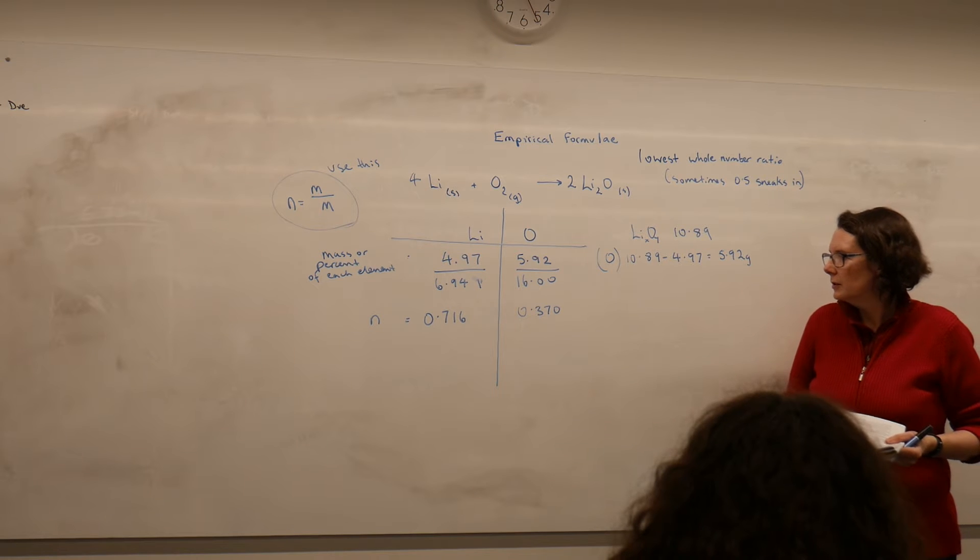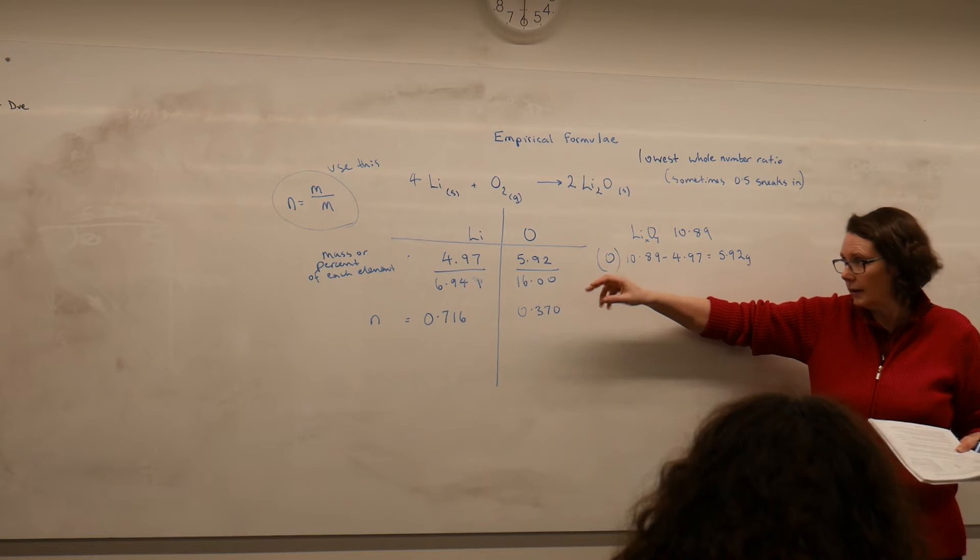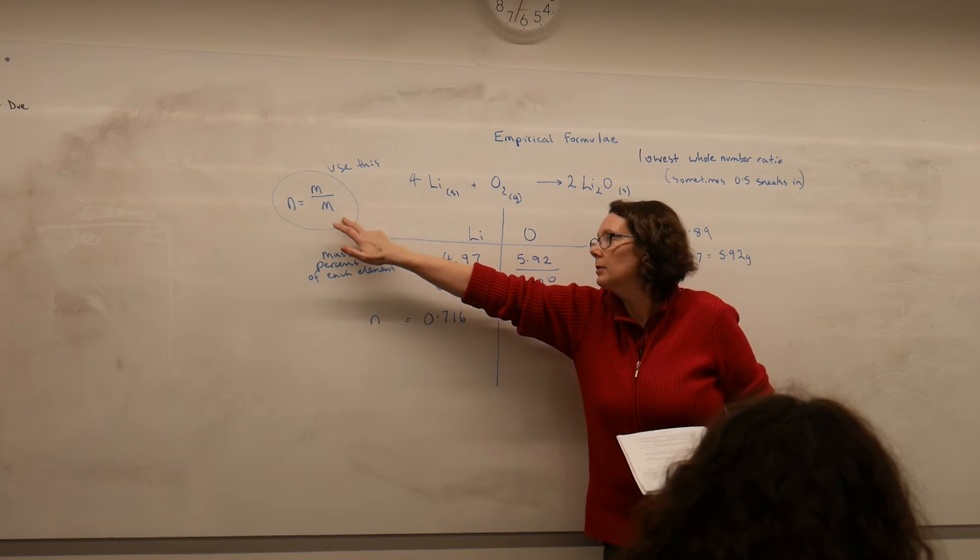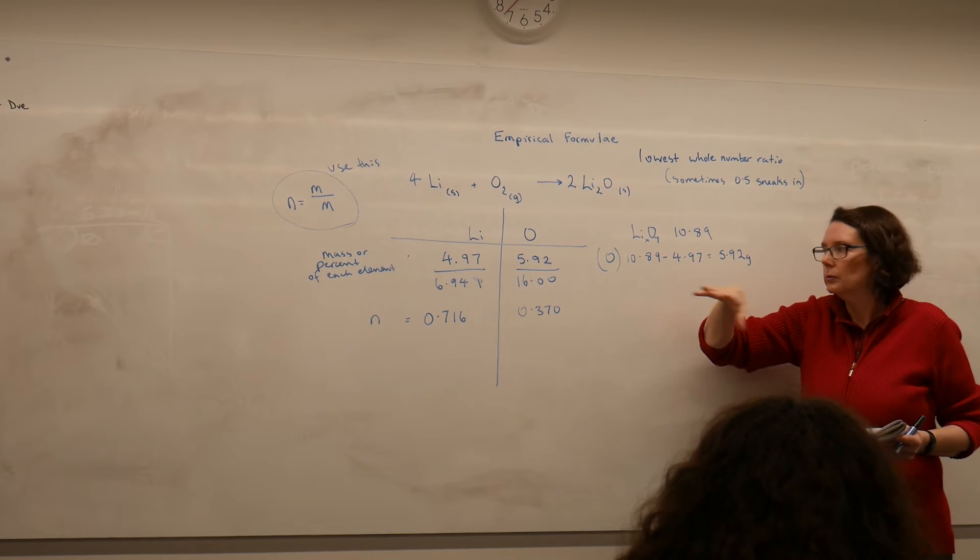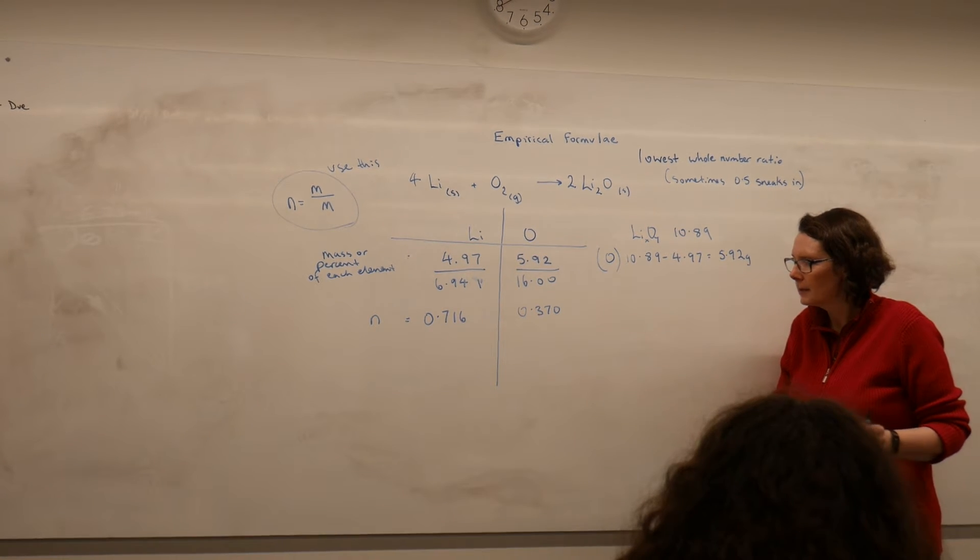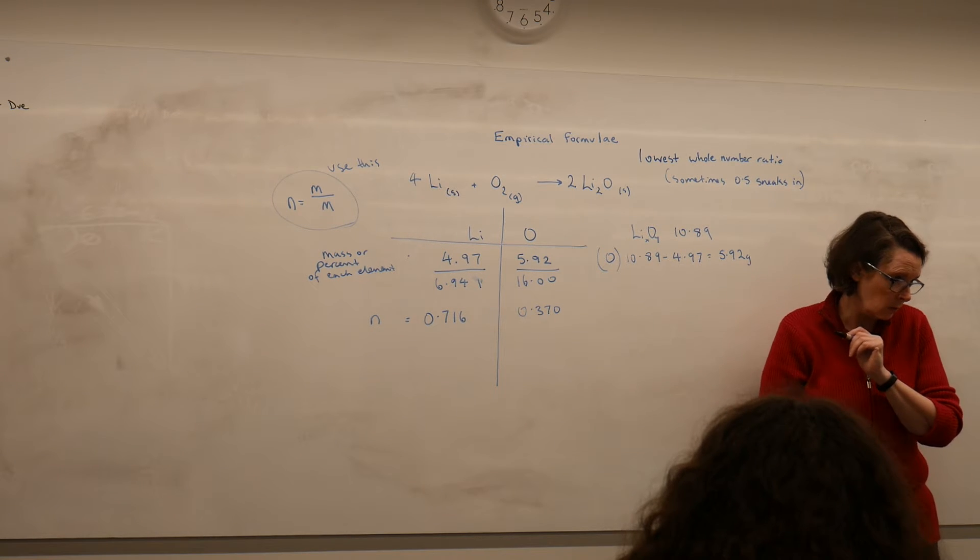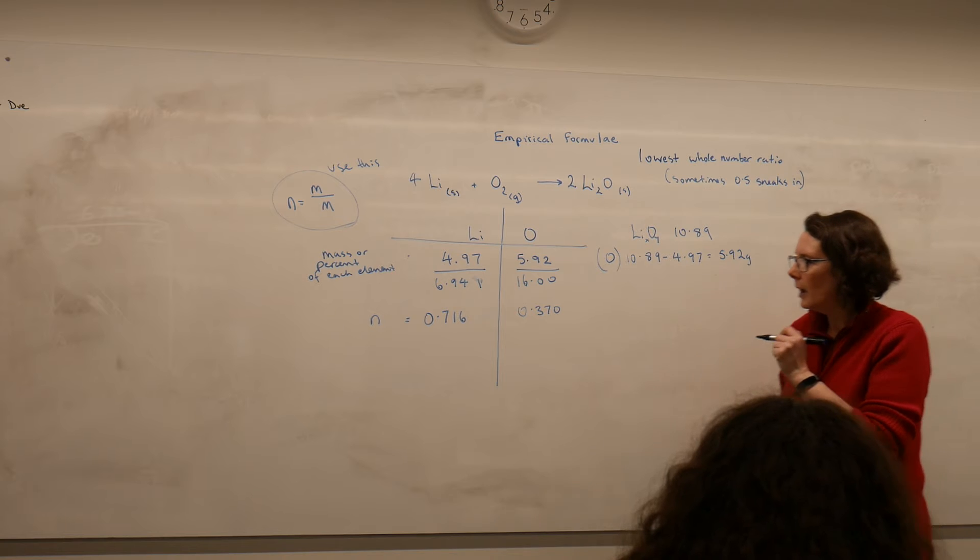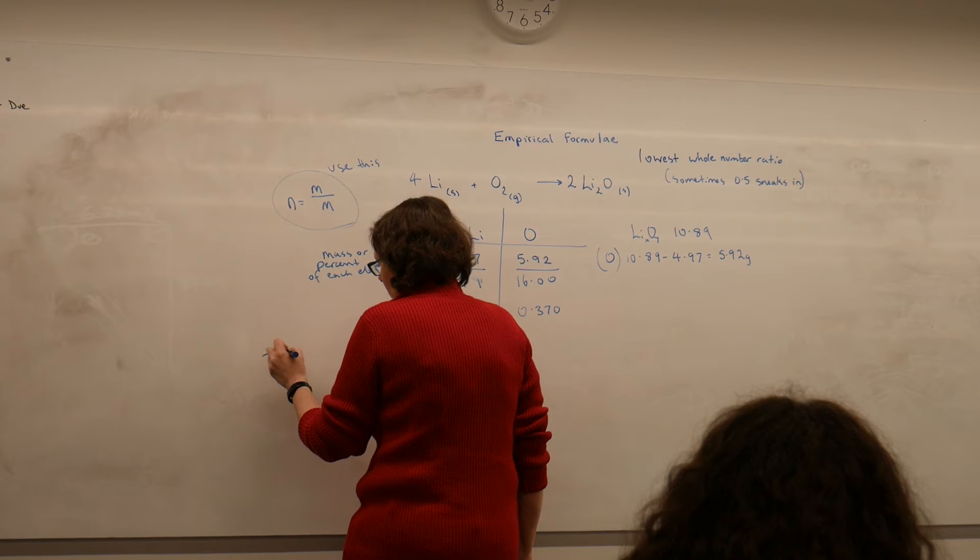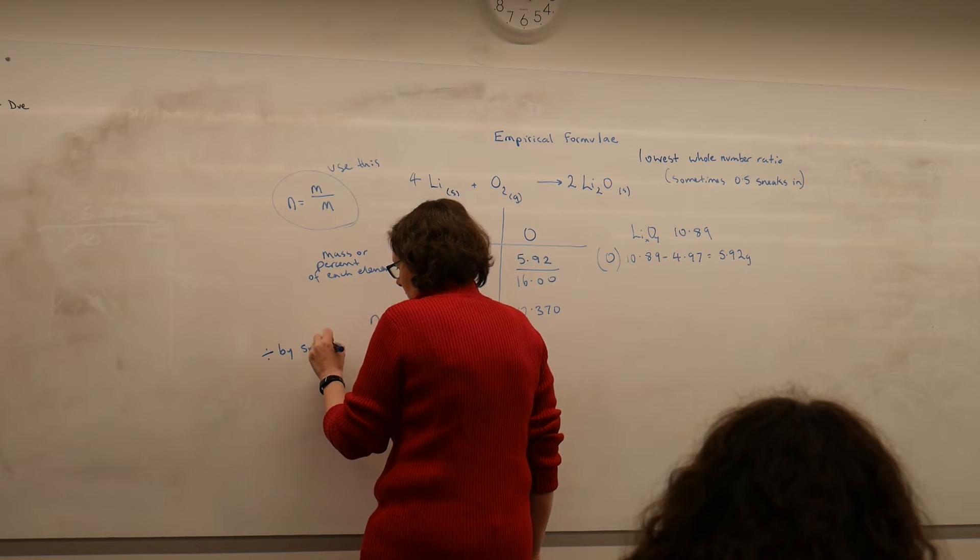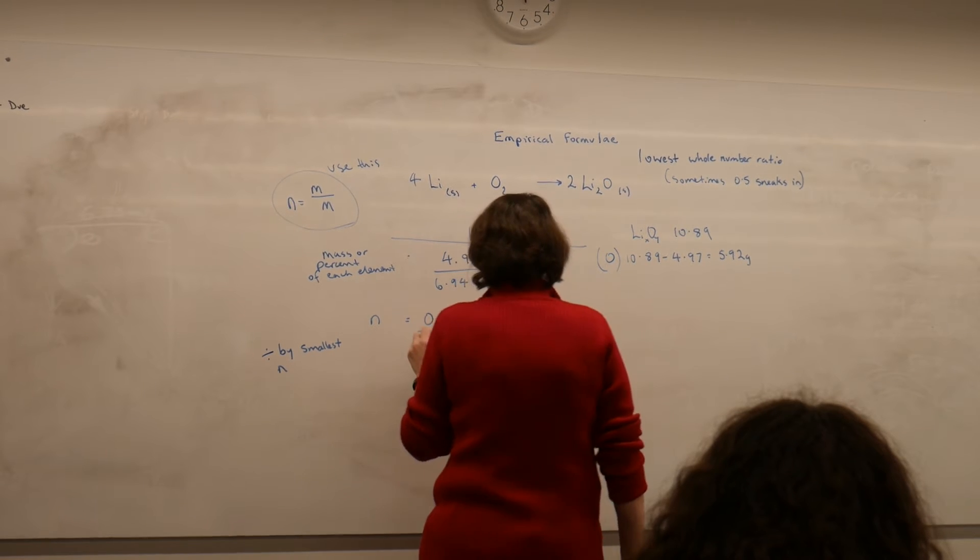Now for some reason, some students get these around the wrong way. They divide the wrong thing. But if you remember that the sample mass goes on top all the time in this relationship, you should be able to get this around the right way. Now what we want to do is convert this into whole number ratio. And the way we do that is we divide through by the smallest number of moles.